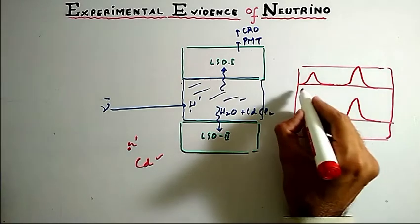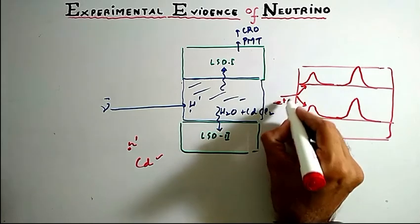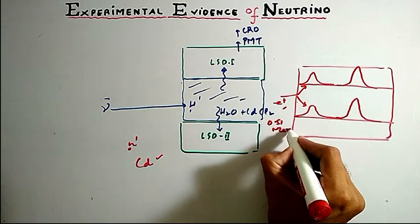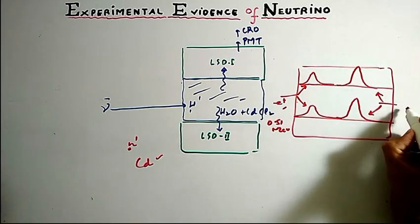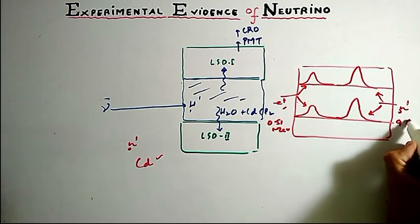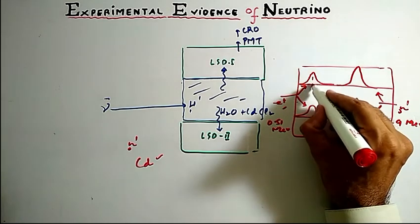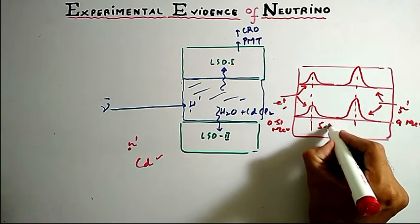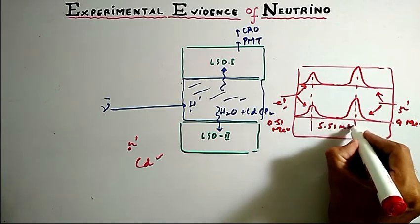These gammas were from the electron capture with energy 0.51 MeV, and these gammas were due to neutron capture with energy 9 MeV. The time delay between these two pulses was found to be 5.51 microseconds.